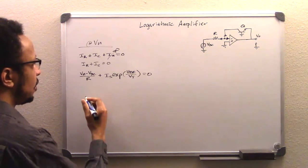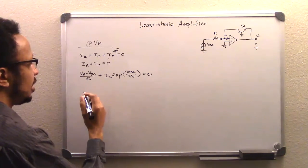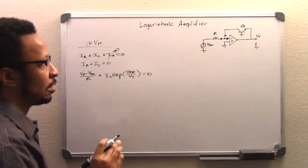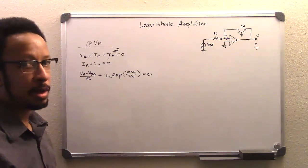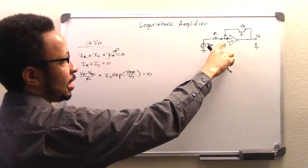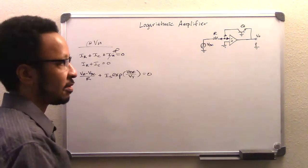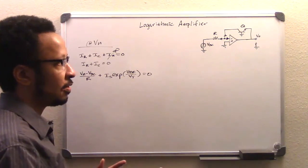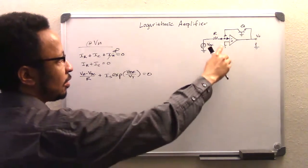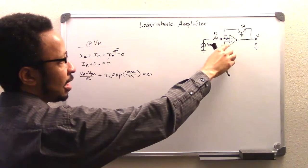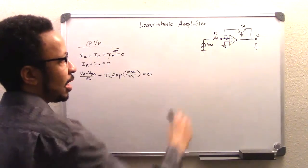And so our next step is to take notice of another op-amp property called the virtual short. VN is going to be at the same potential because of this virtual short property that the op-amp has. It's going to be at the same potential as VP,